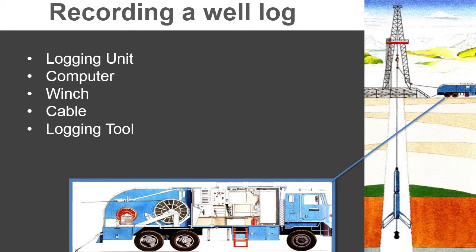On offshore rigs, the logging unit will be what's called a skid unit or offshore unit. It sits permanently on the rig but contains the same equipment — the computer, the winch, the cable, and of course the logging tool strung at the end of the cable. The illustrations here show that on a land-based system, on the right-hand side of the screen, you'll see the logging unit, the rig, and the tools in the well bore. The larger image in the middle of the screen shows a cutaway view of a logging truck with the computer in the recorder cab and the winch at the back of the truck.